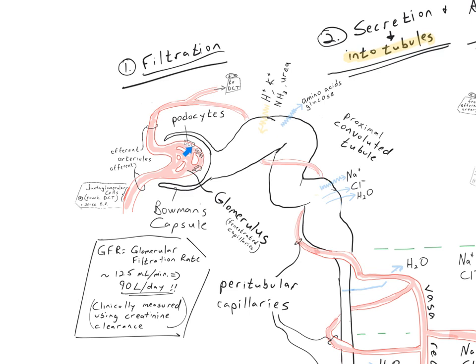They are fed by what is called the afferent arterioles. The afferent arterioles go into the glomerulus, where you have a dense capillary bed where most of the plasma and dissolved substances in the plasma filter out of the blood and into the proximal convoluted tubule. This happens at a startling rate through what are called fenestrated capillaries with lots of holes in them, through podocyte cells that surround the capillaries, at a glomerular filtration rate of about 125 milliliters per minute.